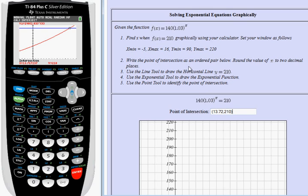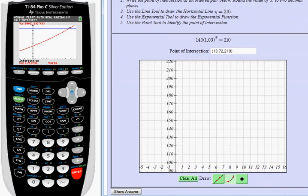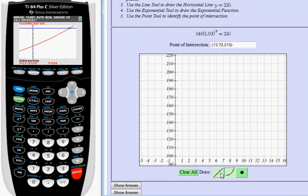The next thing it says to do after writing the point is step three, use the line tool to draw the horizontal line y equals 210. So I'm going to scroll down and use the line tool. Here's the line tool. I need to graph y equals 210, which is basically a horizontal line like this blue line through 210. So I'm just going to click at about 210, make sure that my line looks horizontal, holding the mouse button down, moving, and then letting go. There's the horizontal line 210.